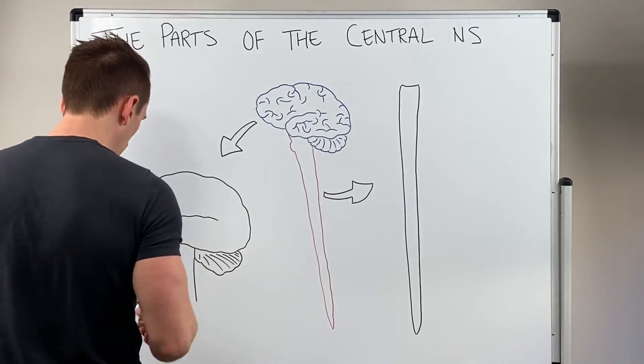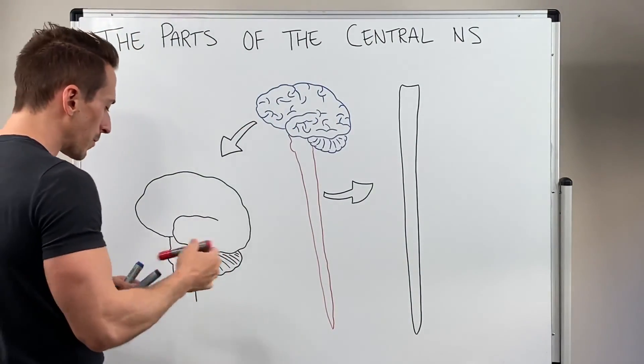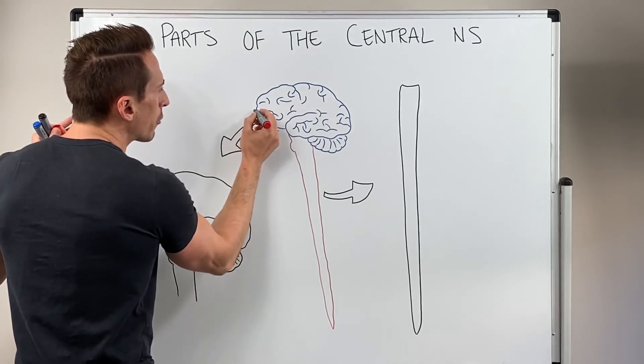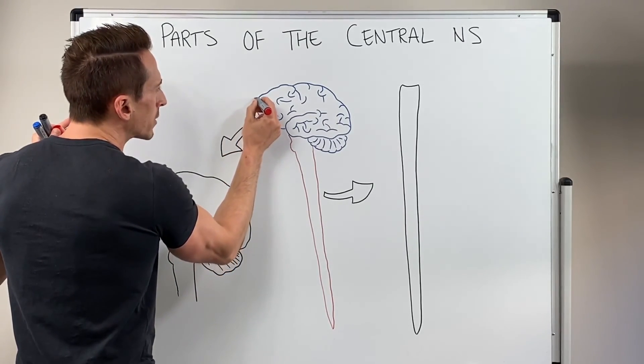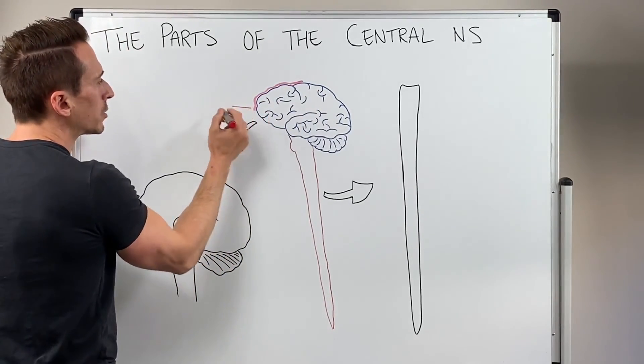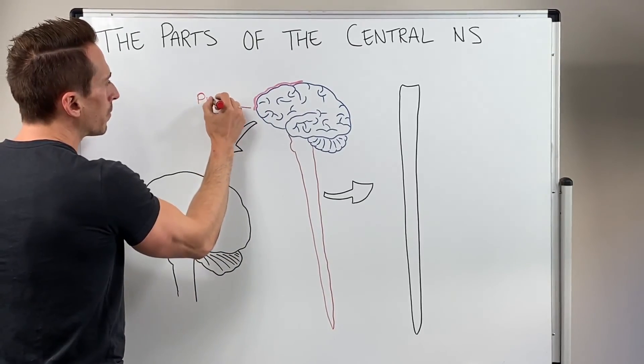So these three layers, if I were to draw them up for you very quickly. The first layer is the layer that's most adherent to the brain itself. And this layer is termed the pia mater.